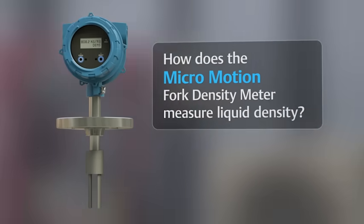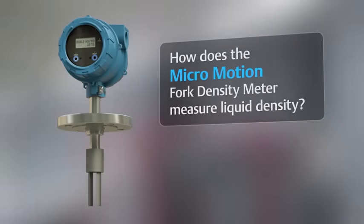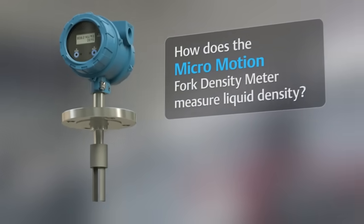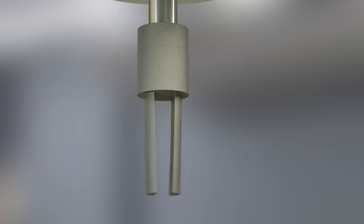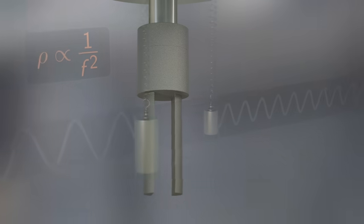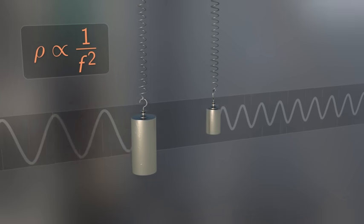How does the Micromotion Fork Density Meter measure liquid density? The fork density meter is an insertion type vibrating element liquid density meter, based on the principle that frequency of vibration is inversely proportional to density.